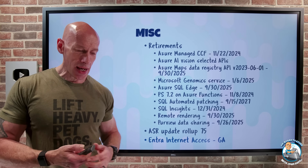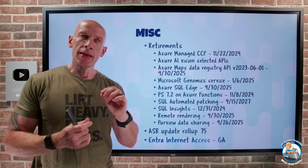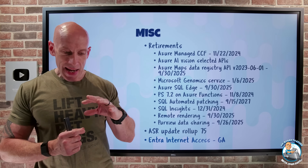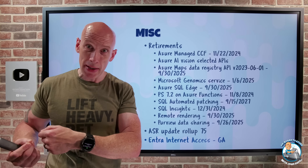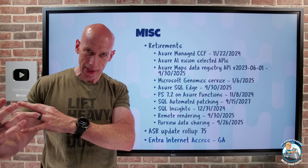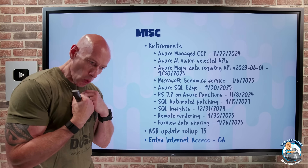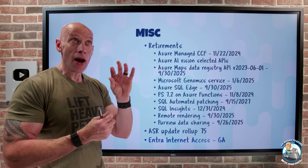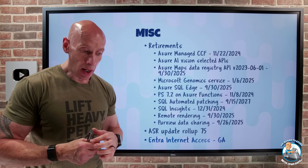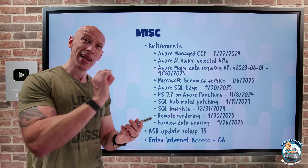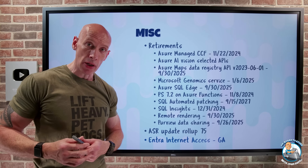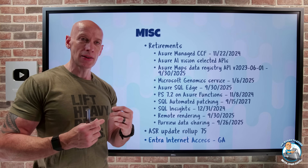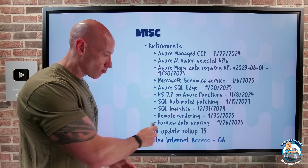Entra Internet Access has gone GA, as part of the Entra Suite. Thinking about that Secure Services Edge and the Secure Web Gateway — this is focused on non-federated SaaS, IaaS, and PaaS commercial sites. You'd prefer to federate with Entra and use conditional access tightly, but if it's not federated, this lets you send all of that internet-based traffic to the Entra Edge, where you can validate it against security profiles. Those security profiles can have allowed and blocked sites based on a category, or based on fully qualified domain names. You can then hook those into conditional access policies, giving you control over things you haven't federated with Entra.